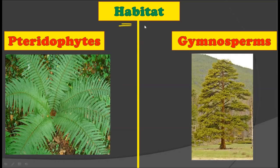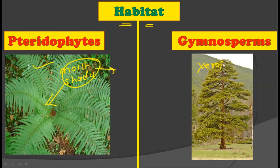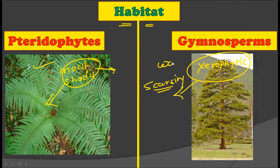The next difference is about habitat. The habitat of pteridophytes is generally moist and shady places — ferns tend to grow around moist and shady places where water is available. On the other hand, gymnosperms show xerophytic habitat, meaning they can grow in scarcity of water. So gymnosperms can grow without abundant water, while pteridophytes require moist and shady places to complete their growth and development.